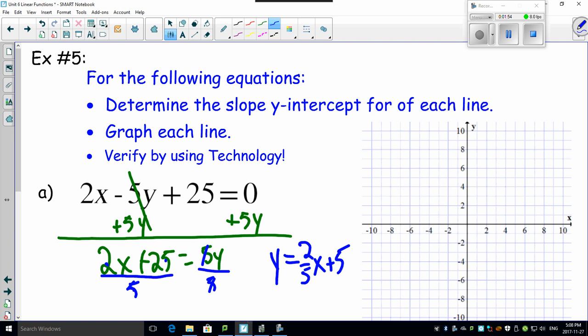And look how much easier this is to graph. My y-intercept is 5. My rise of 2, 1, 2. My run of 5, 1, 2, 3, 4, 5. And I've got a beautiful line that looks like this.